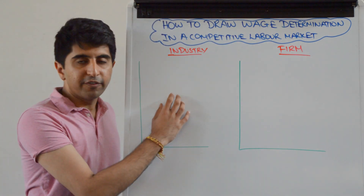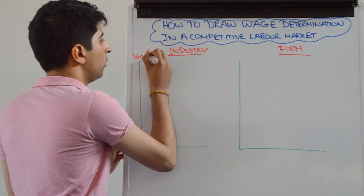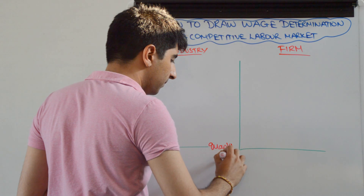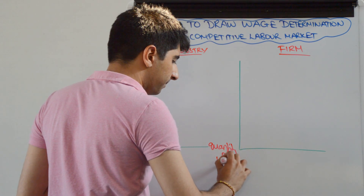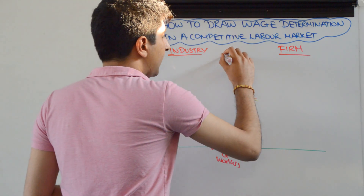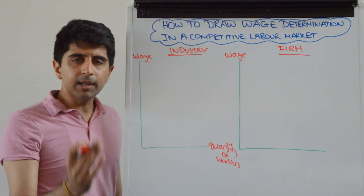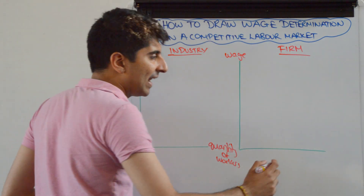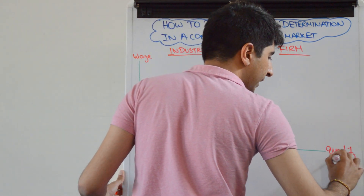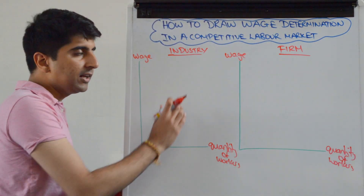We start by focusing on this left-hand diagram. On the y-axis — it's a labour market — so we label wage and quantity of workers. I would also label this diagram at the same time. It's so common that students, when they're drawing slightly more complicated diagrams, they forget their labels. So I would get that done straight away in exactly the same way: wage on the y-axis and quantity of workers on the x-axis.